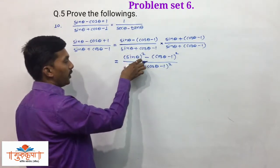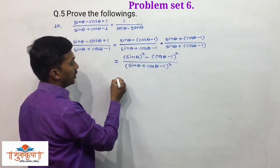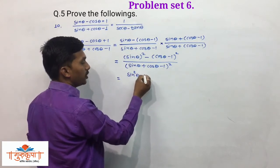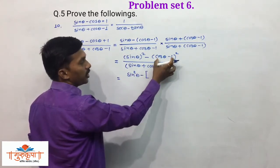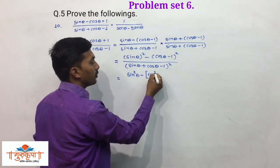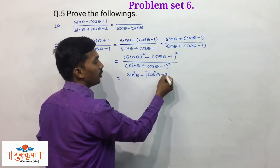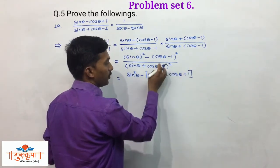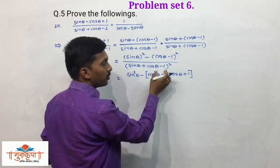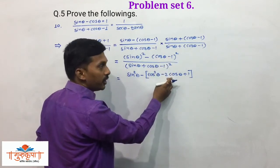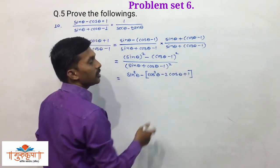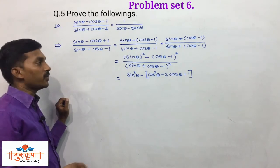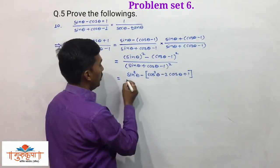Now simplify the square: the first term is sin²θ, and the bracket (cosθ - 1)² expands to cos²θ - 2cosθ + 1 using the formula a² - 2ab + b². This is the square expansion of the difference of two terms.